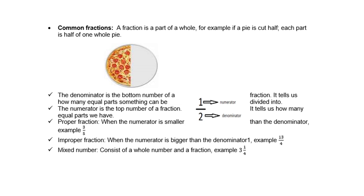The denominator is the bottom number of the fraction. It tells us how many equal parts something can be divided into. The numerator is the top number of a fraction. It tells us how many equal parts we have.